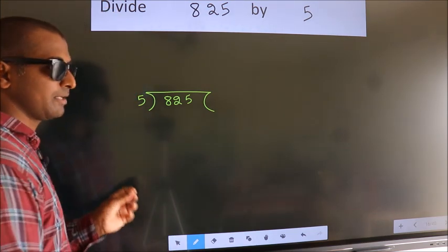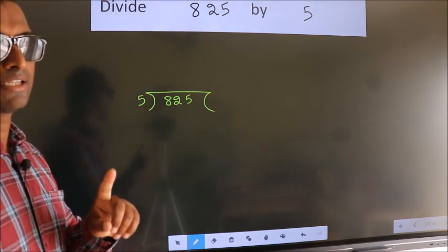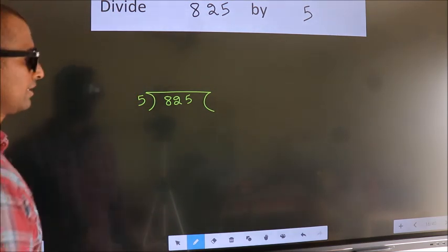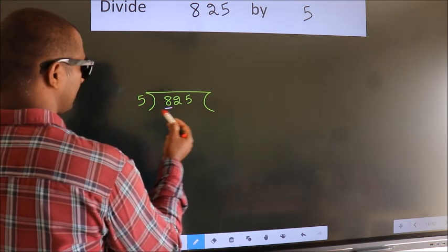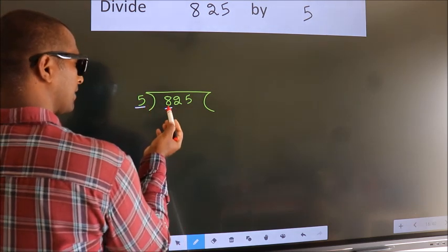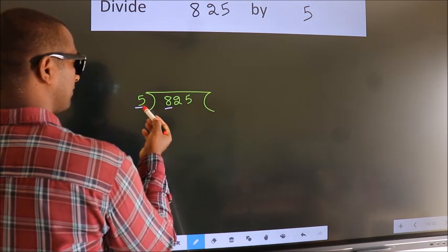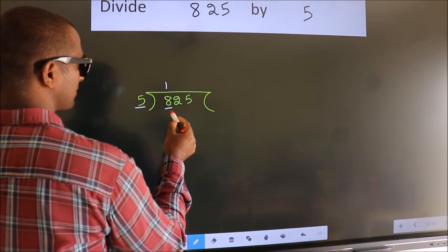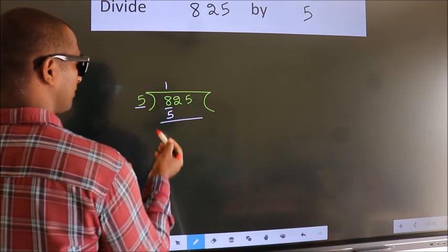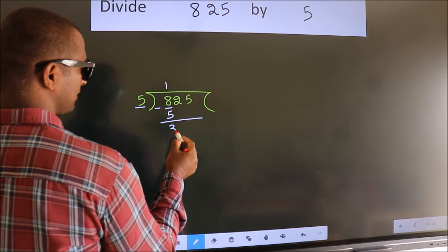This is your step 1. Next, here we have 8, here 5. A number close to 8 in 5 table is 5 once 5. Now, we should subtract. We get 3.